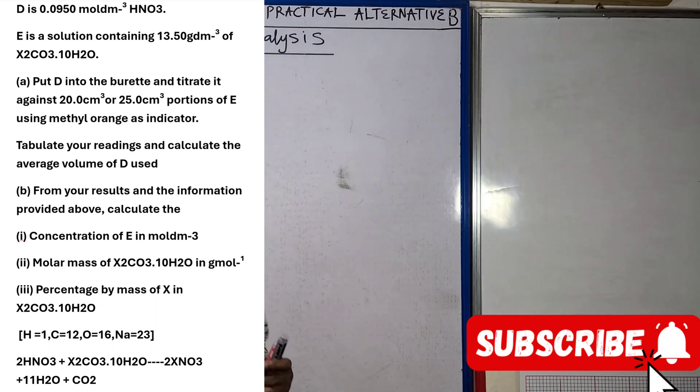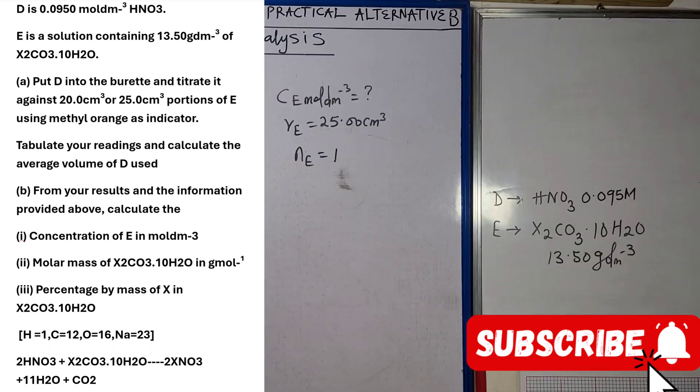This is lecture video 3 for quantitative analysis. We were given a question here - D here is HNO₃ and we were given the concentration as 0.095 mole per dm³.